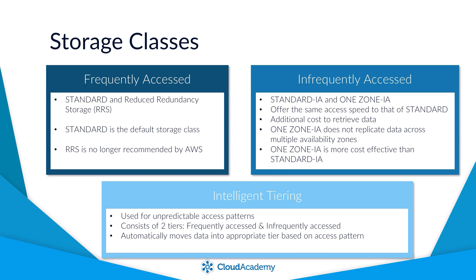There are no retrieval costs for your data with Intelligent Tiering, unlike Standard IA and One Zone IA. However, be aware that there is a small monthly cost associated with each object monitored by the Intelligent Tiering class, and each object must be larger than 128KB.